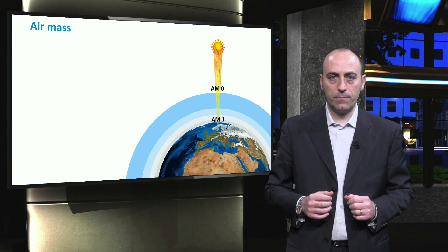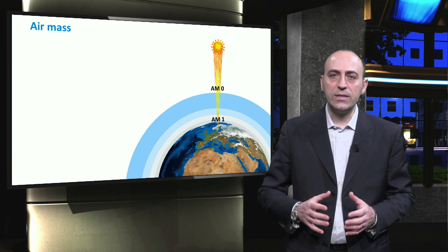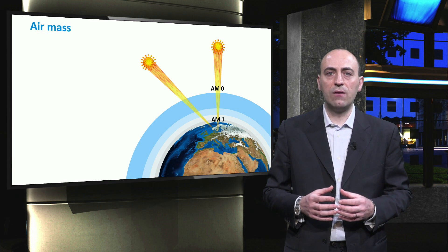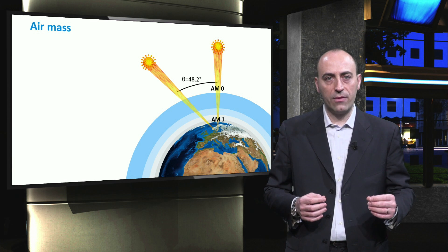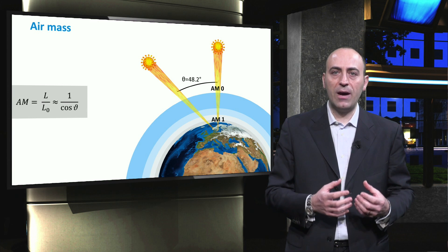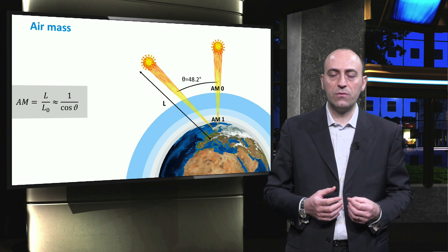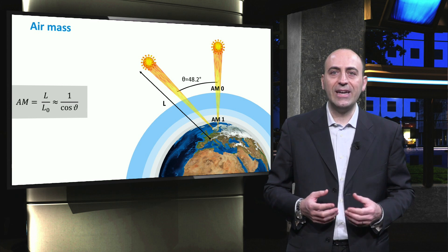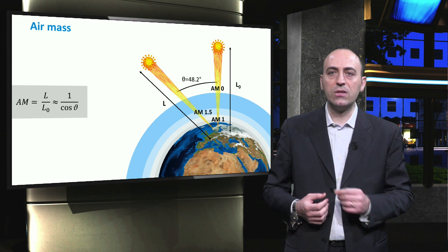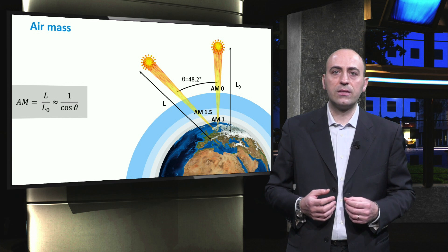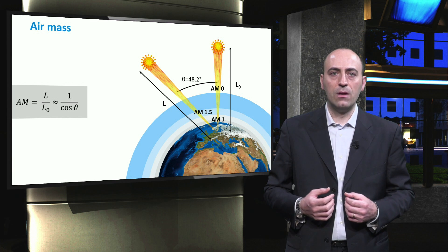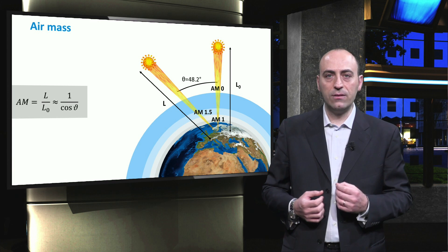However, not always the Sun is perpendicular to the location, and thus light has to travel through the atmosphere for a longer path. So, the air mass is given by the ratio of the actual path length of sunlight through the atmosphere, L, divided by its minimal distance, which is obtained when Sun is perpendicular to the location, L0. The air mass can also be expressed as 1 over the cosine of angle theta between the Sun and the zenith.